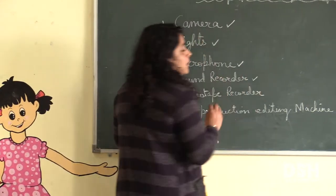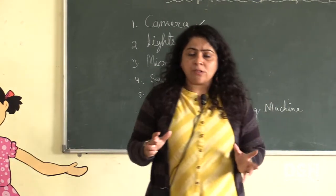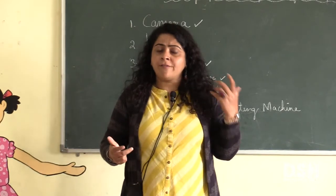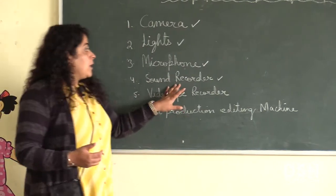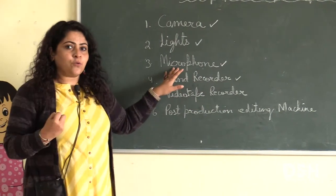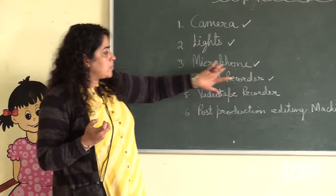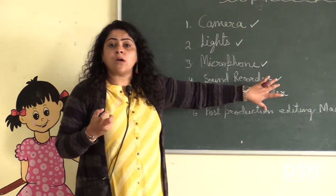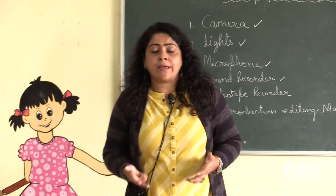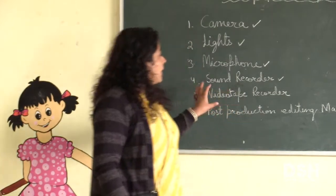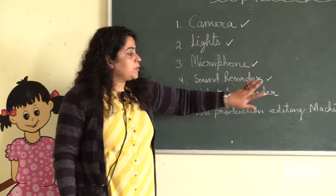Then comes sound recorder. You must have seen that many background effects keep coming — when a programme is running, background music is playing, many sound effects come. That is called sound recorder. The sound being produced here — how it is being captured, how everything sounds together — the sound recorder takes all the sound and delivers it together to the audience: mixing all the effects with what the artist is saying or singing, and giving a good effect to reach the audience. Sound recorder is also very important.